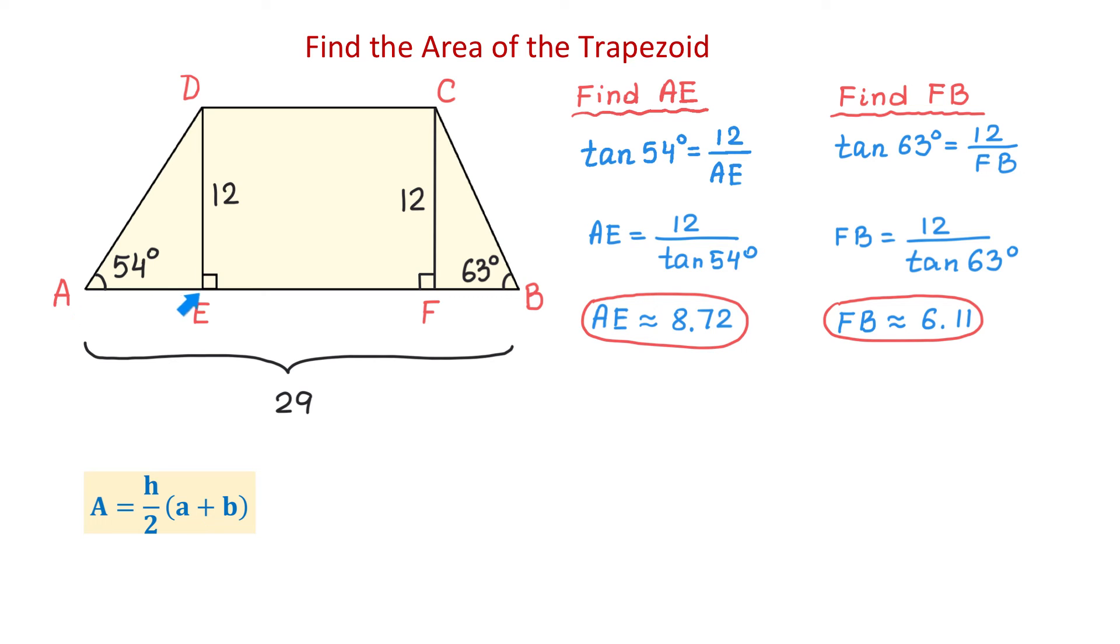And now, once we know A, E, and F, B, we will find E, F by subtracting A, E, and F, B from 29. So, E, F equals 29 minus 8.72 and minus 6.11. Then, E, F is equal to 14.17 units. Then, because DC is equal to E, F, we can say that DC is also 14.17 units.